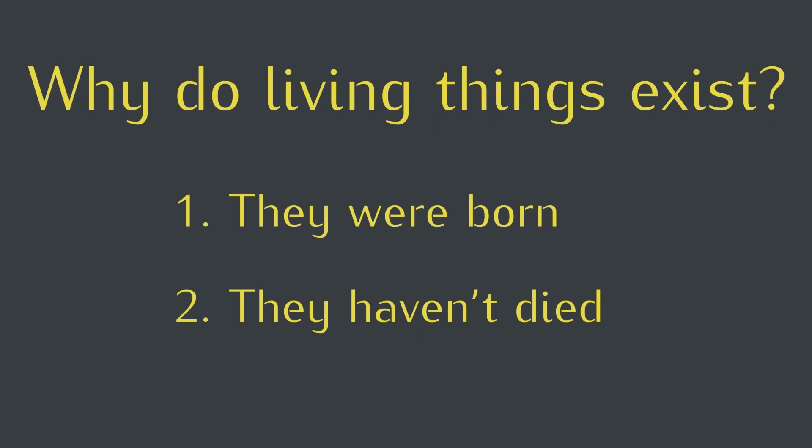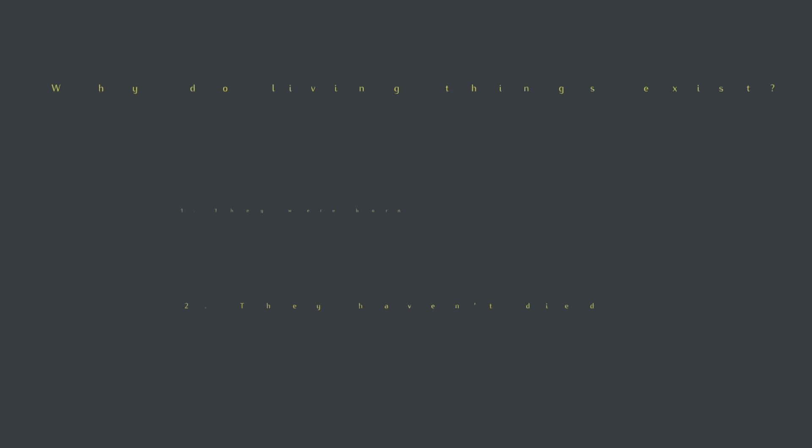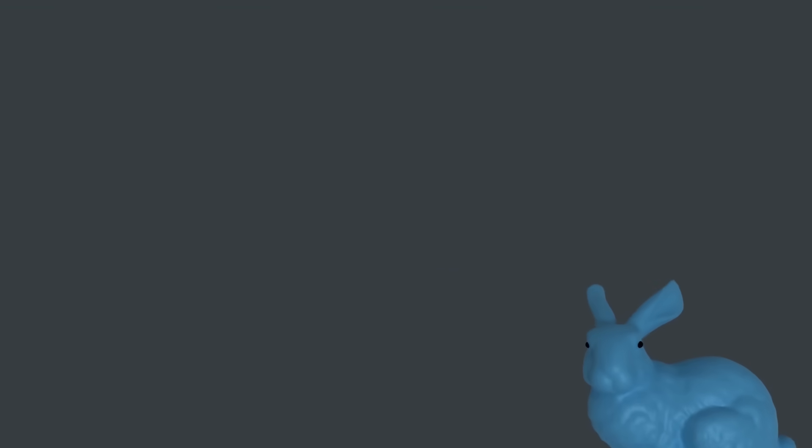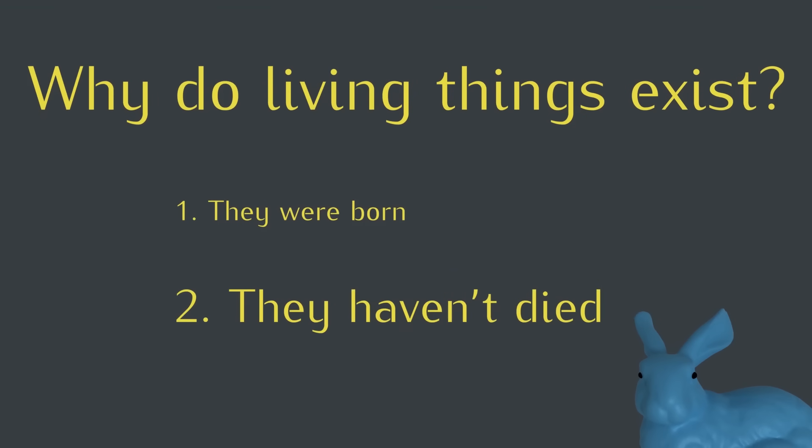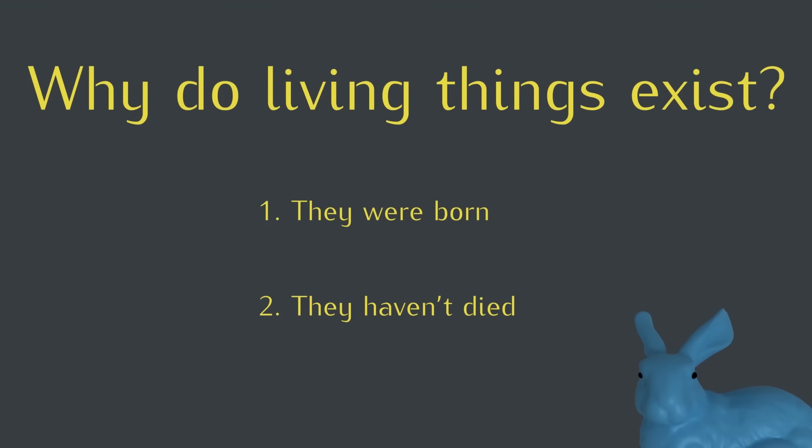Alright, so what does this have to do with living things? From what we've said so far, it kind of seems like we shouldn't exist. We're too complex to form spontaneously the way raindrops do. Imagine all the right atoms and molecules just happening to come together to form a rabbit. It's pretty unlikely. And we also don't live all that long. But somehow, living organisms are still pretty common. So what's going on?